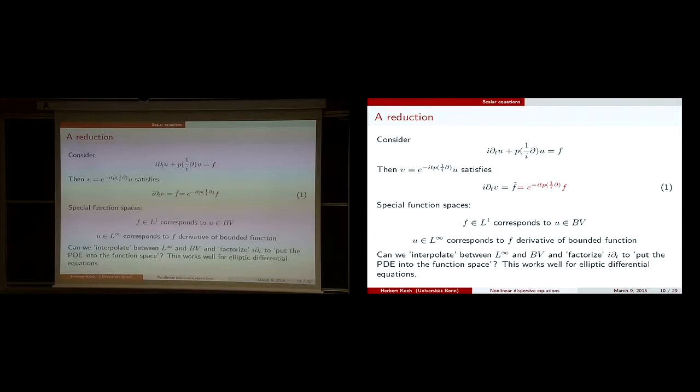The first observation is that if F is in L^1, then we get a solution U in BV (bounded variation). That's roughly, after some fine points, a one-to-one correspondence. Bounded variation roughly says that the derivative is a measure. For this differential equation, the space BV plays a special role — the right-hand side L^1 plays a special role.